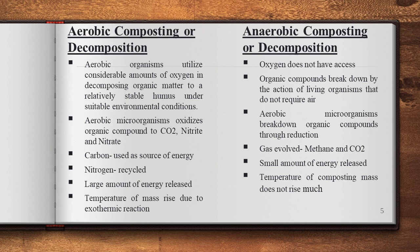Composting involves decomposition in two categories: aerobic decomposition and anaerobic decomposition. In aerobic decomposition, organisms use oxygen and organic matter decomposes into stable products under suitable environmental conditions. Aerobic microorganisms oxidize organic compounds to carbon dioxide, nitrite, and nitrate, where carbon is used as a source of energy and nitrogen is recycled.